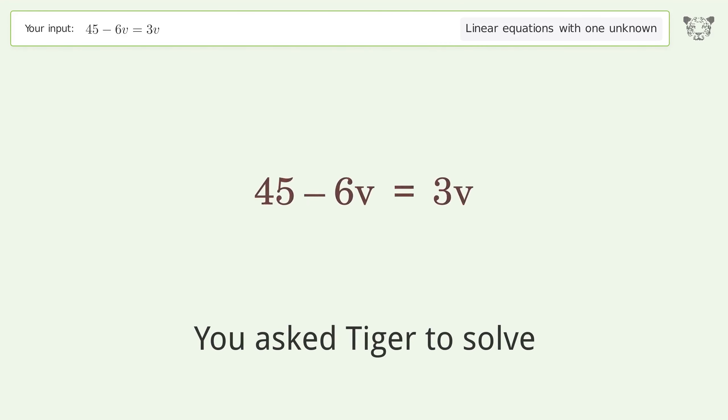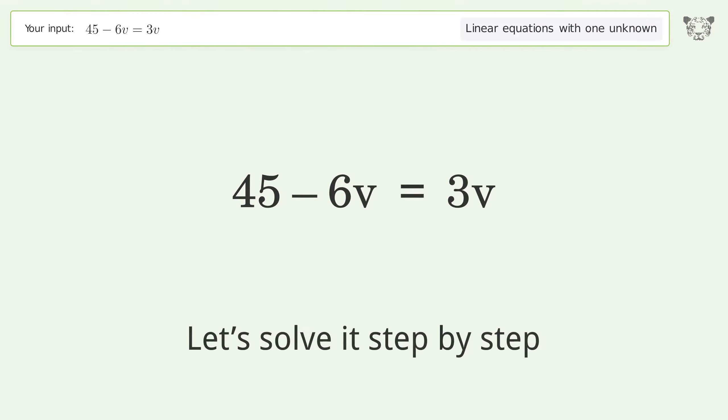You asked Tiger to solve. This deals with linear equations with one unknown. The final result is V equals 5. Let's solve it step by step.